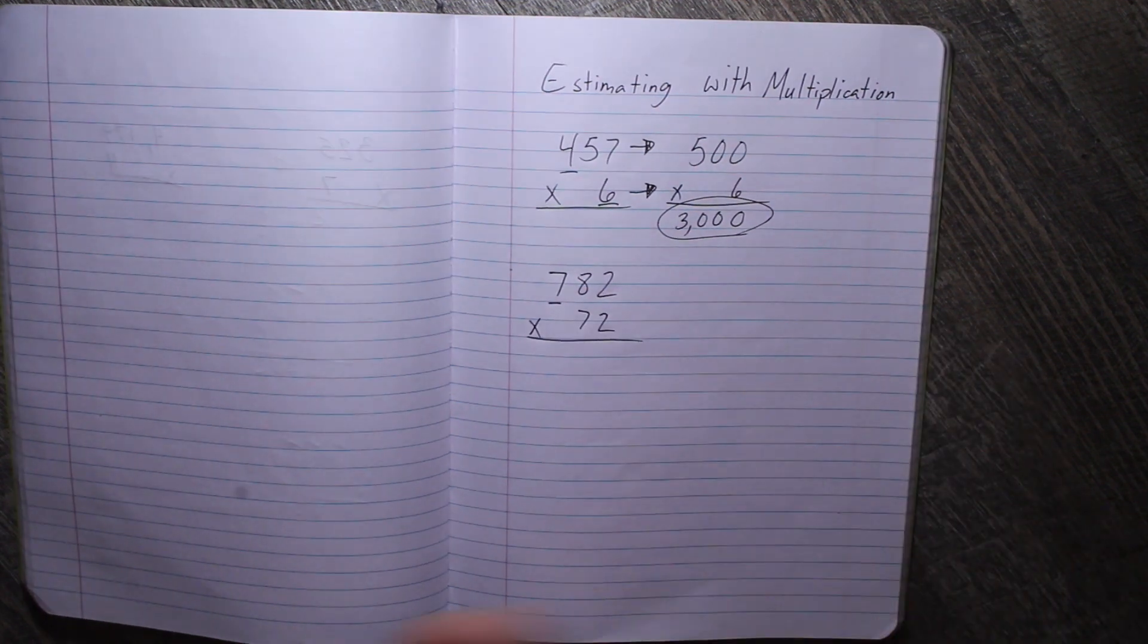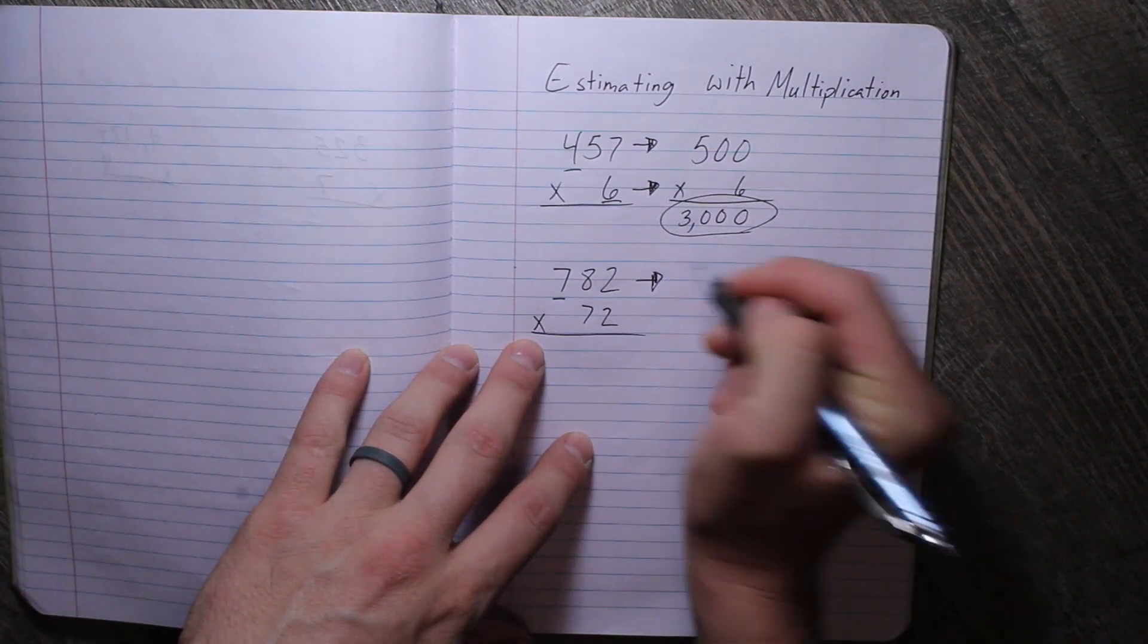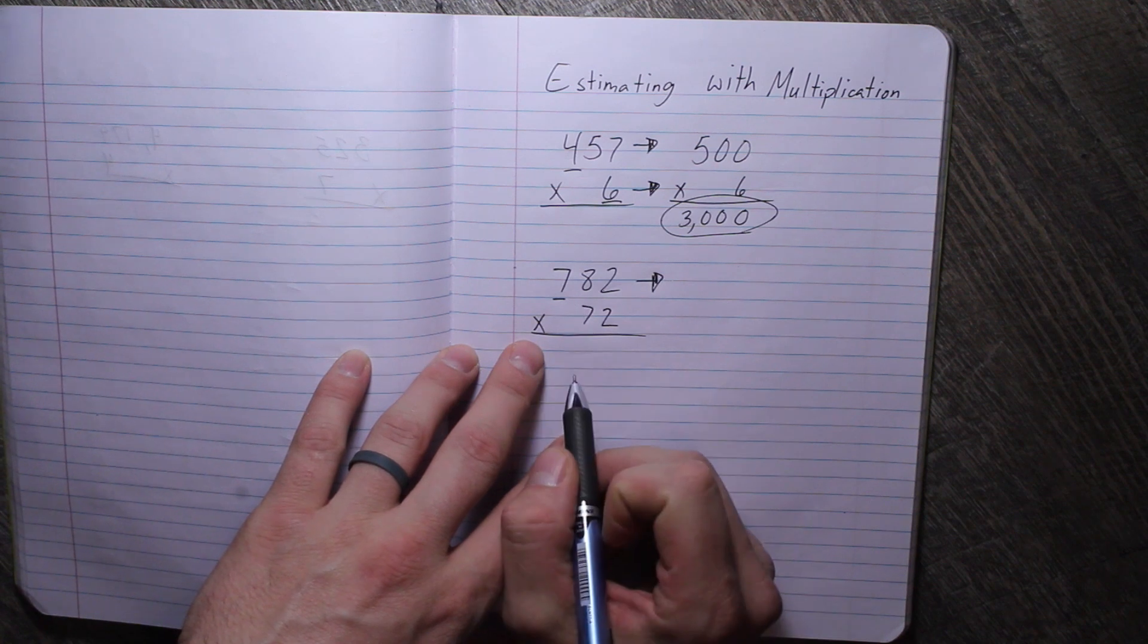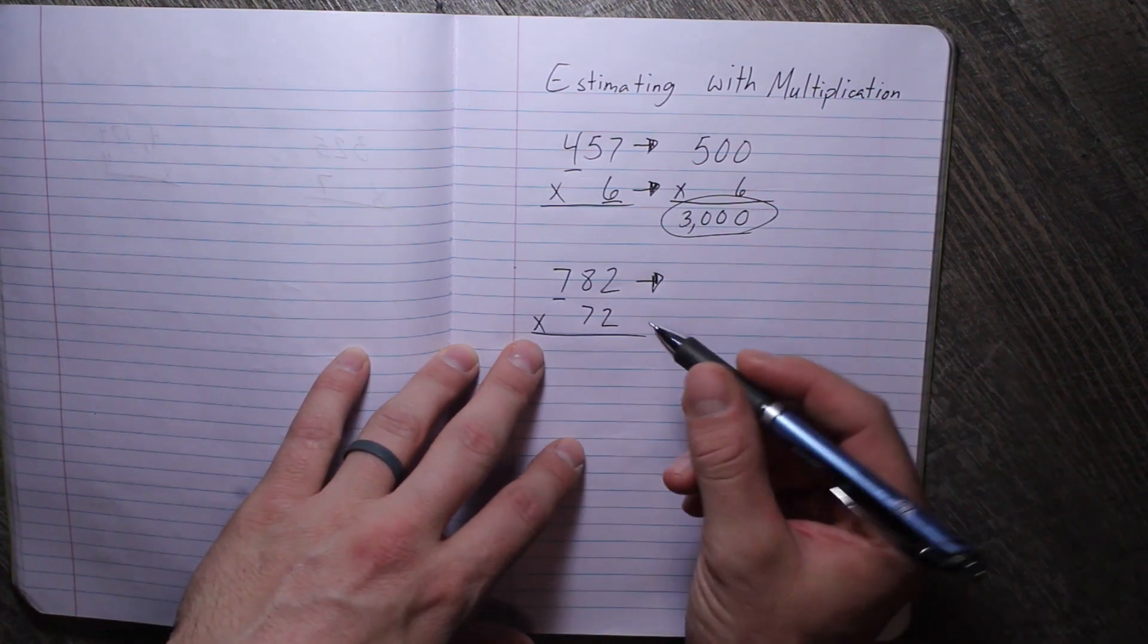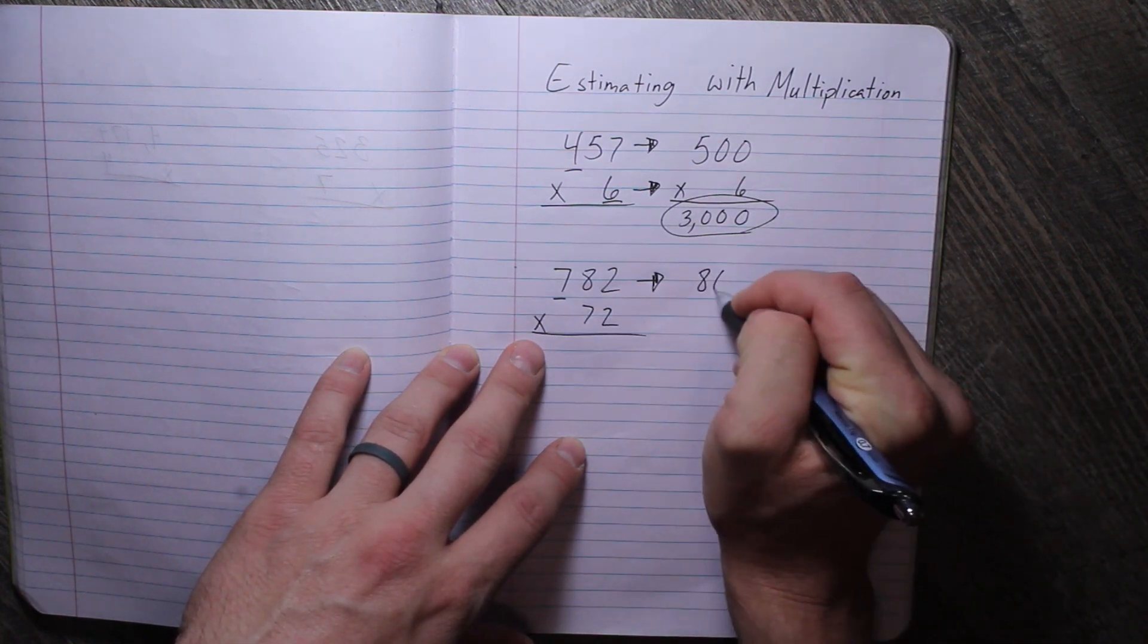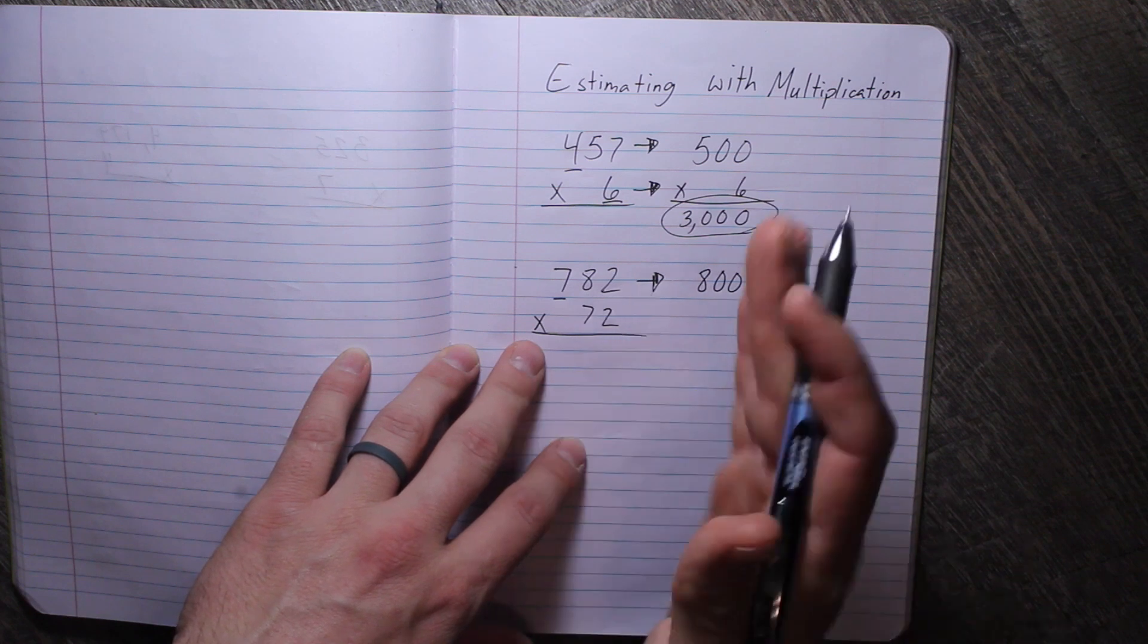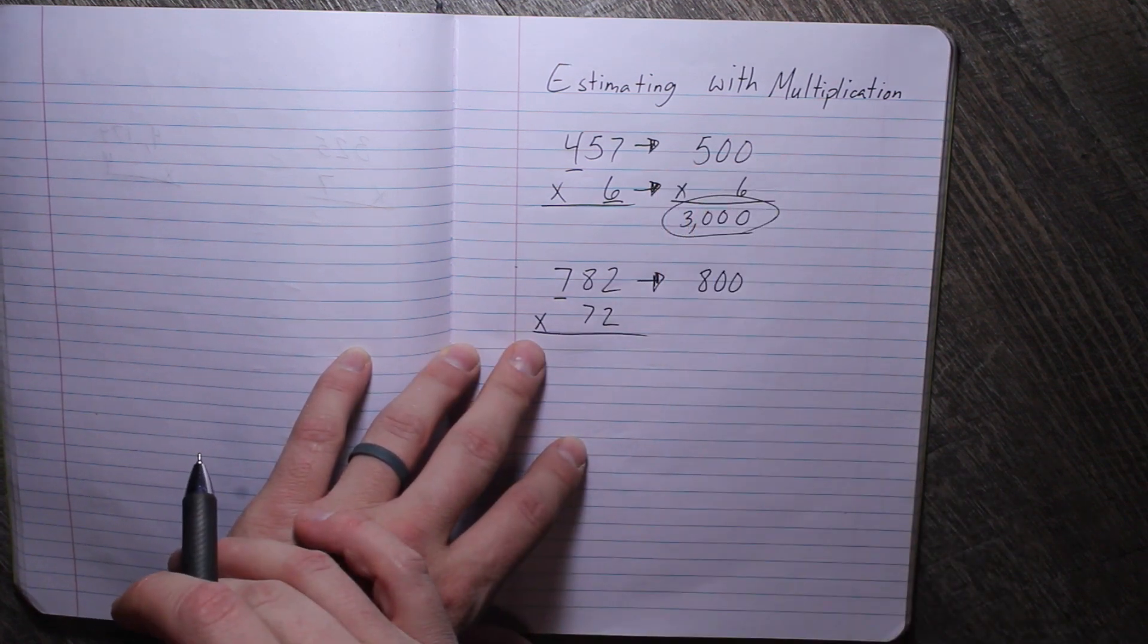So this one goes again to the hundreds place. Since that goes to the hundreds place, we're going to round that to the hundreds place. And we'll say, is this closer to 700 or is it closer to 800? If we're looking at a number line again, it's going to be closer to 800 because it is past 750, past that midpoint on a number line.